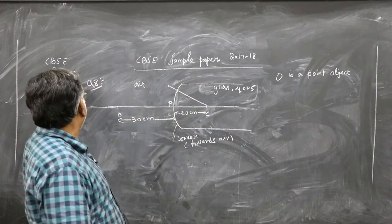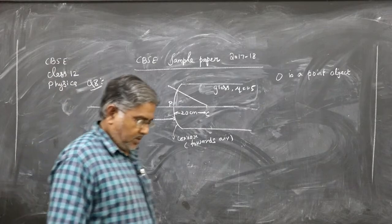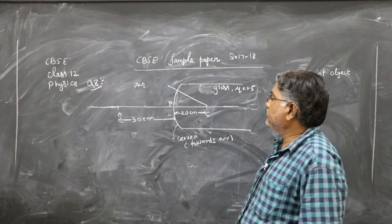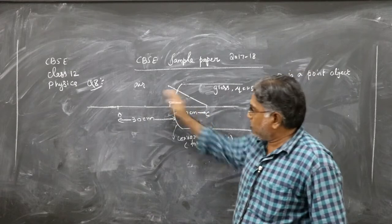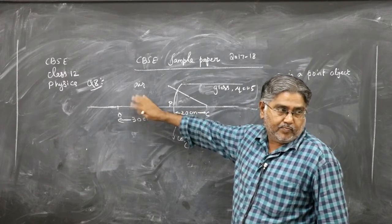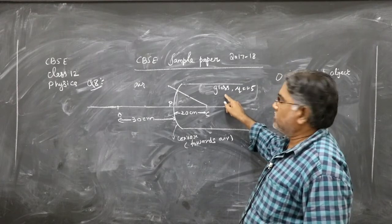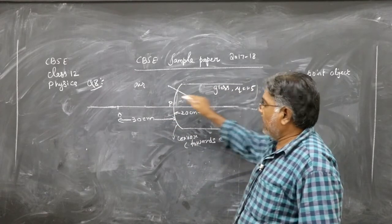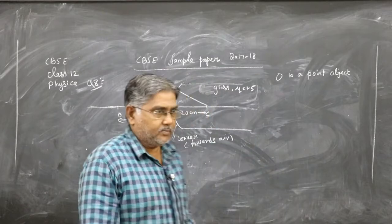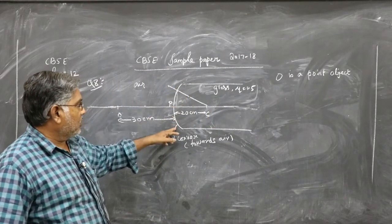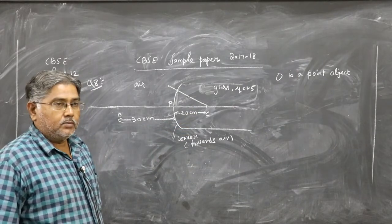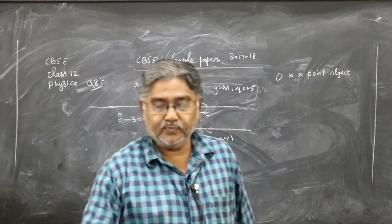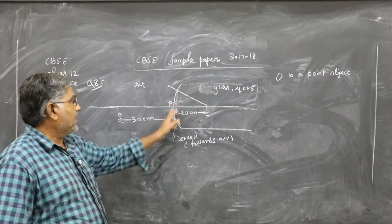Question number eight — you are given a spherical convex surface convex towards air. The glass has a spherical convex surface towards air. The refractive index of glass is 1.5, air is 1. The radius of curvature of the surface is 20 cm. An object is kept at a distance of 30 cm in front of the convex surface. This is refraction at a single refracting surface.